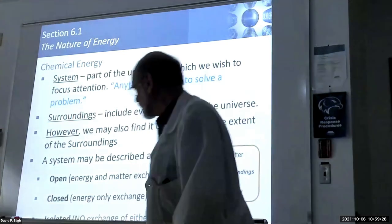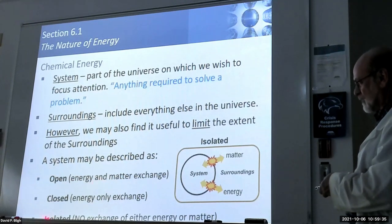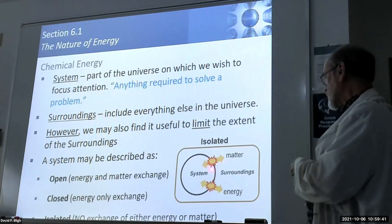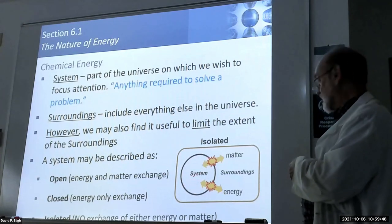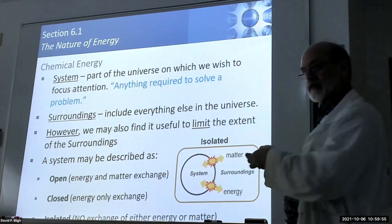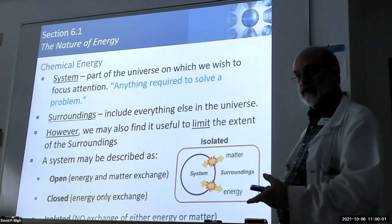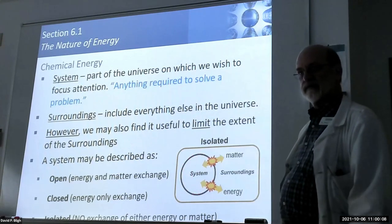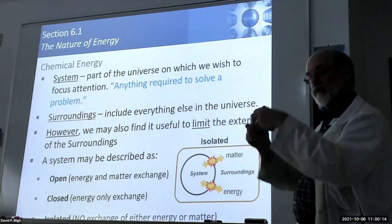The third form is an isolated system - there is no exchange of energy or matter across that boundary. What happens in Vegas stays in Vegas. We use isolated systems particularly in our calorimeter. The boundary is made up of two styrofoam coffee cups, and that effectively isolates our system inside the calorimeter from everything else.